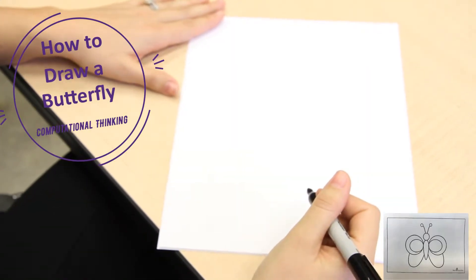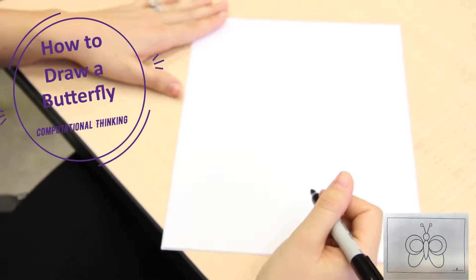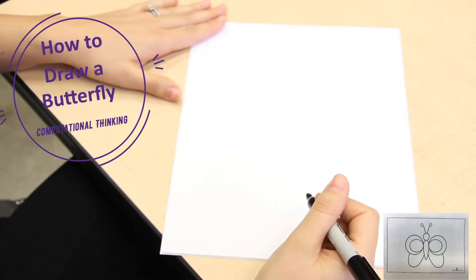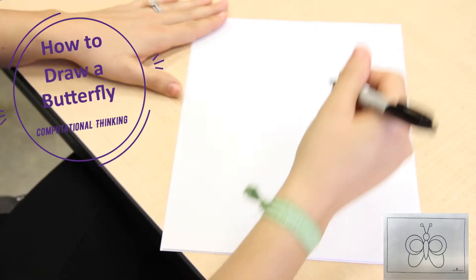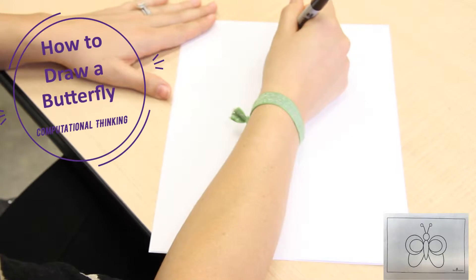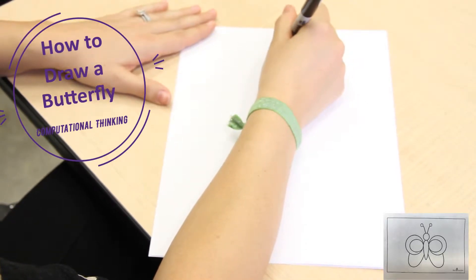So, place your marker in the top middle section of the paper and put the tip on the paper and draw a small circle.